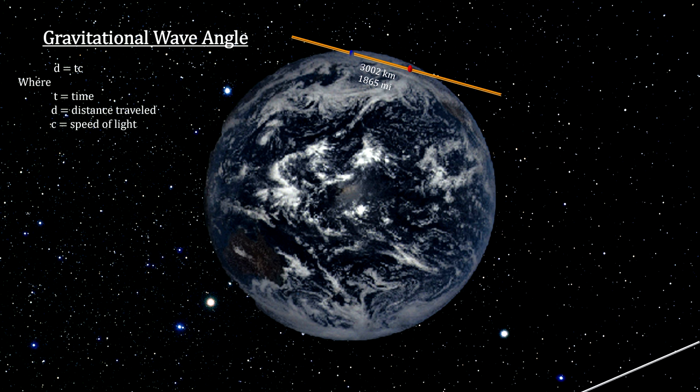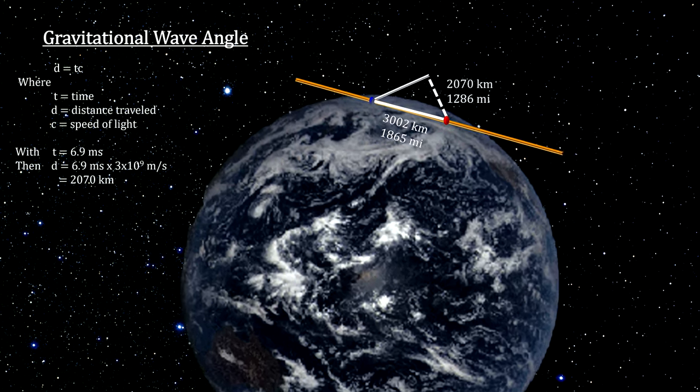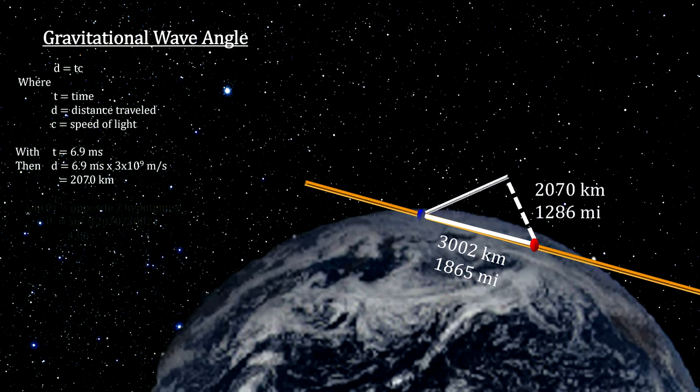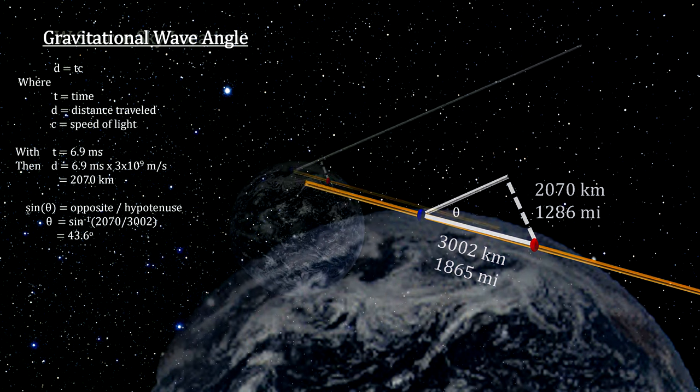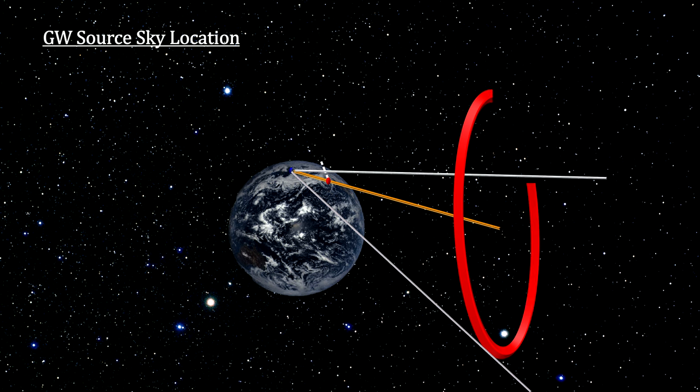What we detected was a wave that came in at an angle that caused a delay of 6.9 milliseconds. The dotted line represents the distance the wave had to travel for a piece of it to reach the Hanford interferometer. A little trigonometry gives us the angle. But with only two interferometers, this angle gives us a circle of possible directions, not the single direction that's needed.